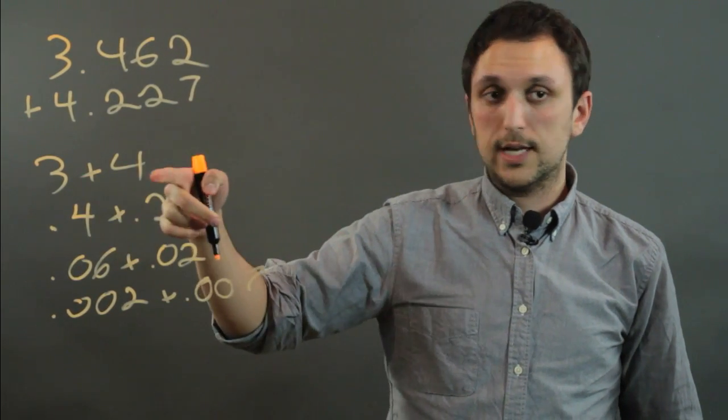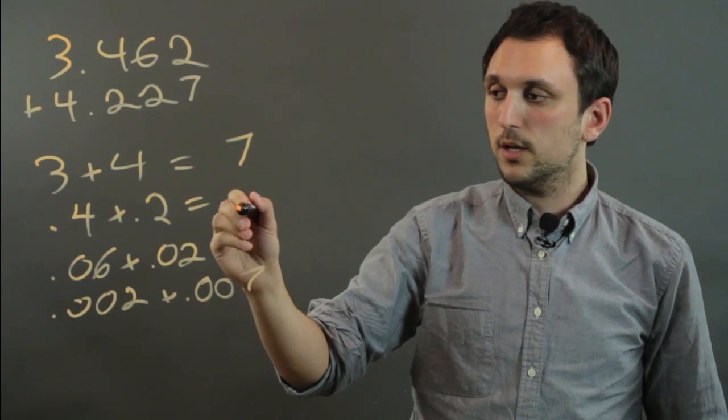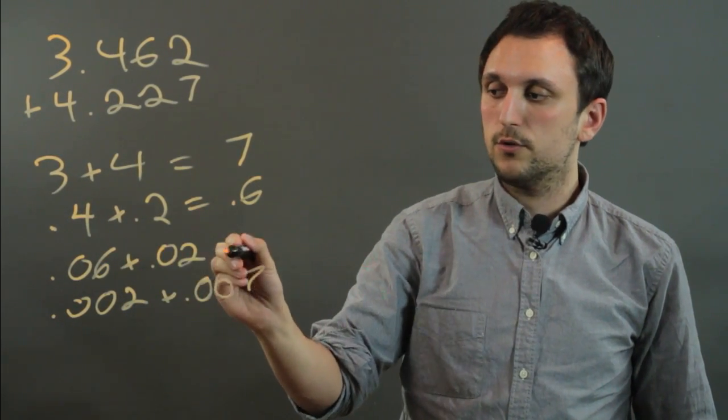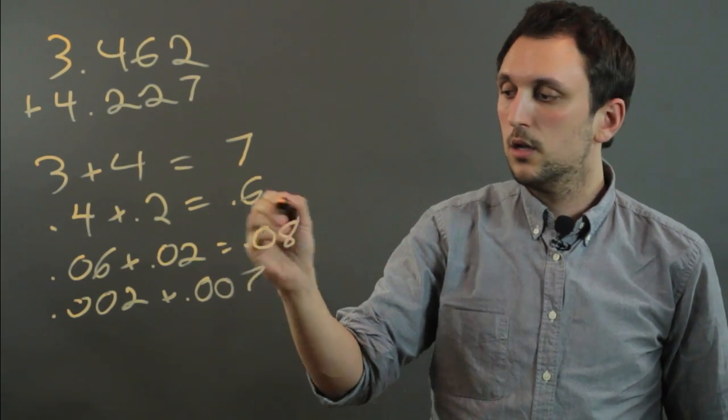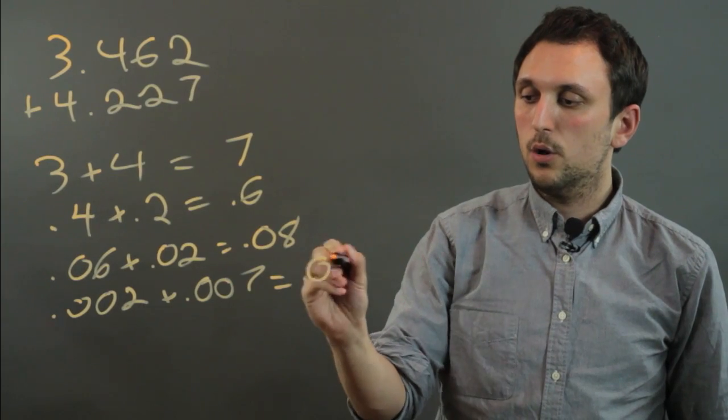So we would first add up 3 plus 4, and that's 7. 0.4 plus 0.2, which is 0.6, 0.06 plus 0.02, which is 0.08, and then 0.002 plus 0.007, which is 0.009.